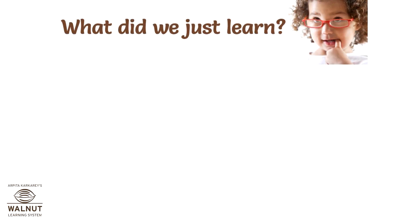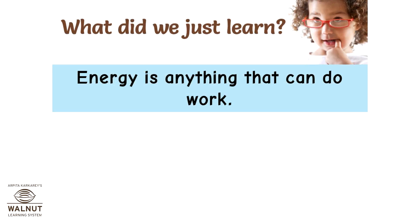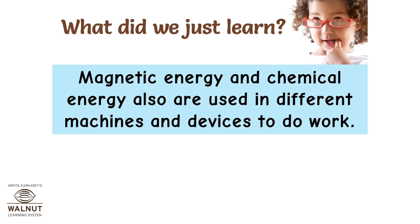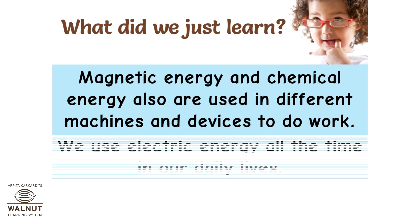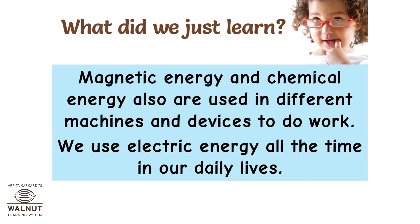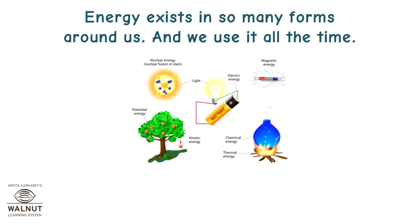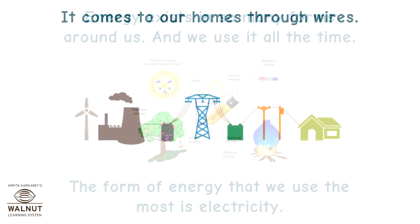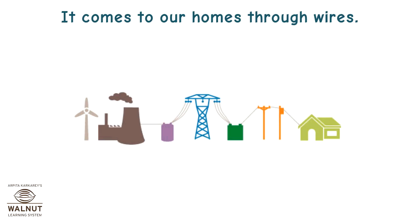What did we just learn? Energy is anything that can do work. Heat, light, and sound are forms of energy. Electric energy and chemical energy are also used in different machines and devices to do work. We use electric energy all the time in our daily lives. Energy exists in so many forms around us, and the form of energy we use the most is electricity, which comes to our homes through wires.